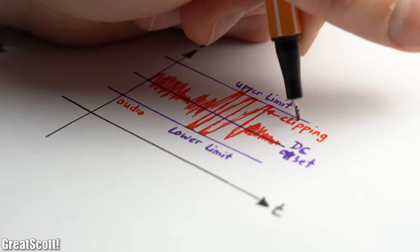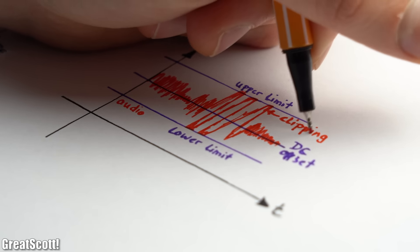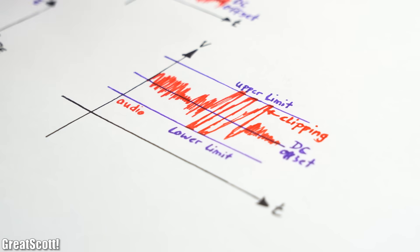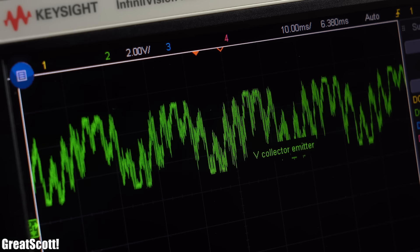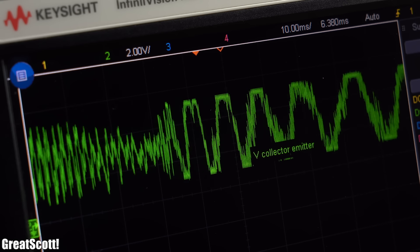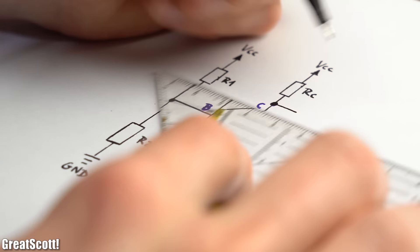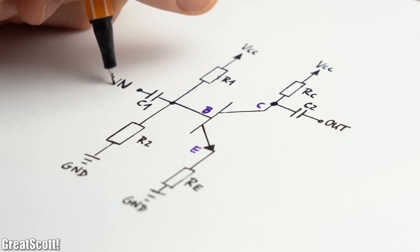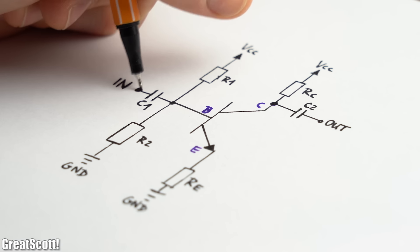FYI though, if the output voltage wants to exceed those limits, then the audio begins to clip, which looks like this and sounds horrible. Last but not least, we also got two capacitors to basically get rid of the DC voltage for the audio input and the output signal.